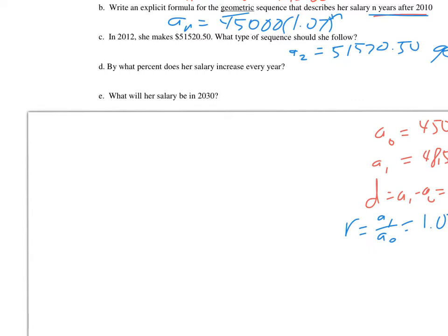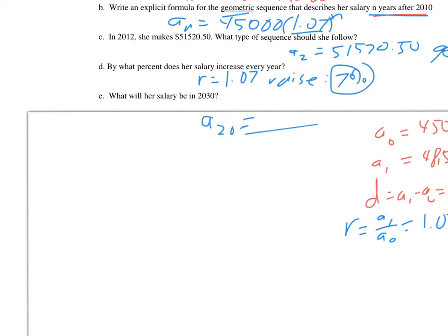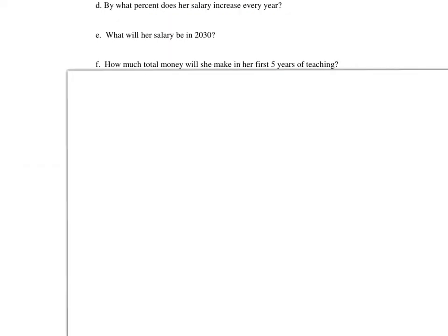By what percent does she go up? Since r is 1.07, the increase is only 7% — you compare to 1, so it's 7% more than 1. For the salary in 2030, use the geometric formula and compute a sub 20, since that's 20 years after 2010. For the total salary in her first 5 years of teaching, add a sub 0 through a sub 4. That is 5 years, so stop at a sub 4 and use the geometric sum formula.